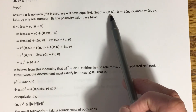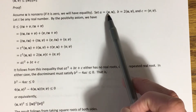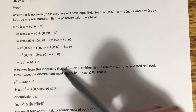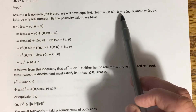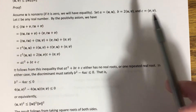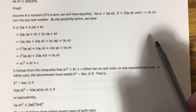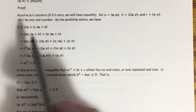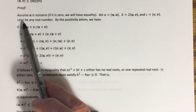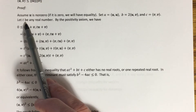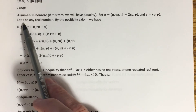I'm going to let a equal the inner product of u with itself — remember, that's the same as the norm of u squared. b is going to equal two times the inner product of u with v, and c is going to equal the inner product of v with v. Then we're going to let t be any real number, treated essentially as a scalar variable.